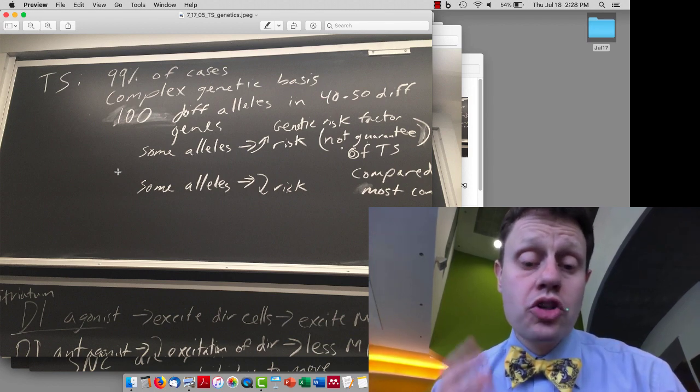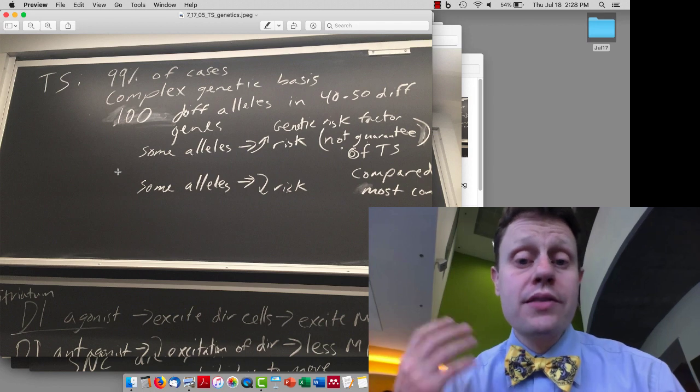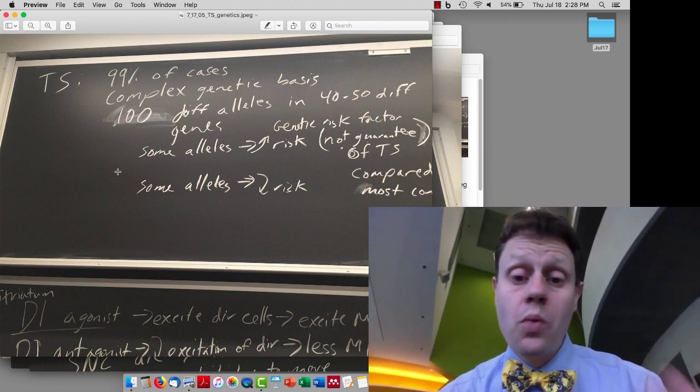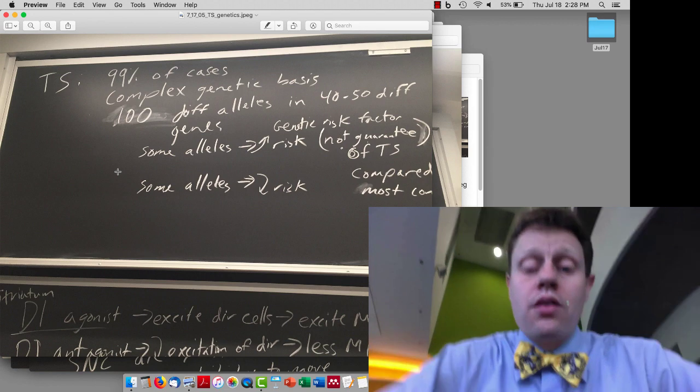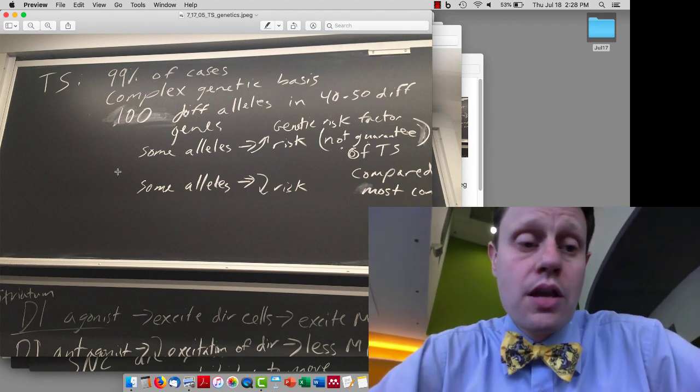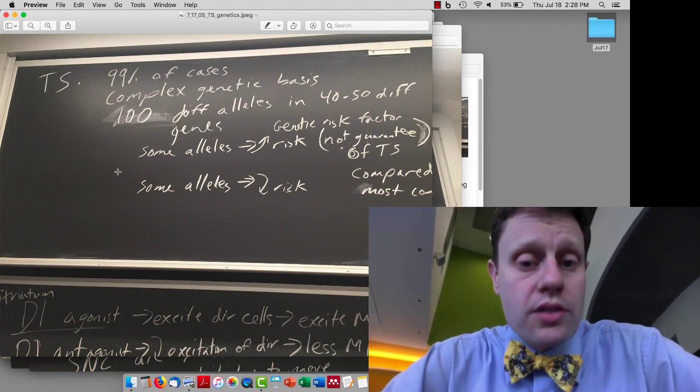So what that means is you can have two people with the exact same genetic profile. Some people have Tourette's, one has Tourette's, one doesn't. Identical twins might be one person with Tourette's, one person without.